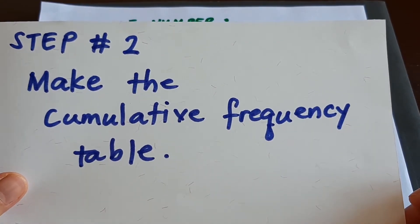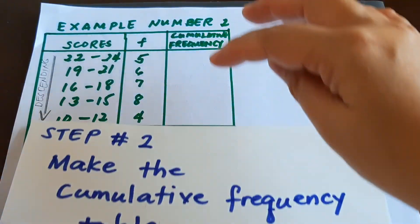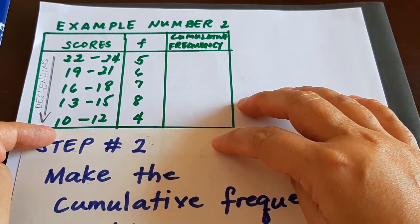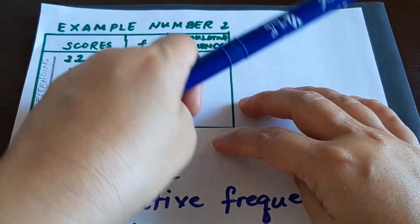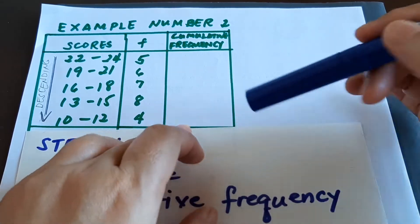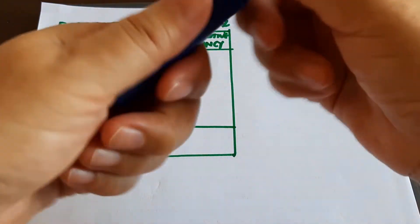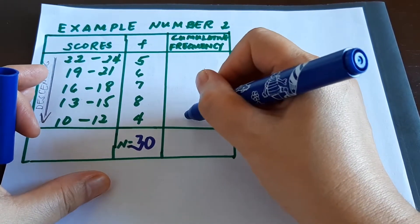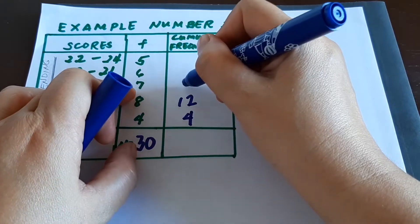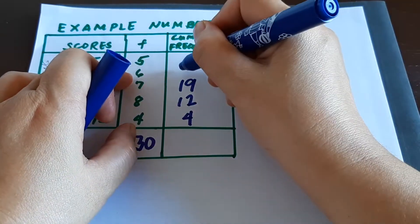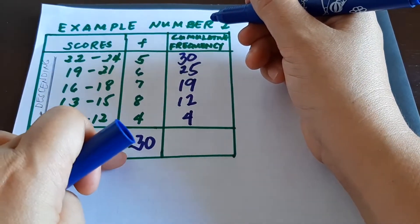Step two: make the cumulative frequency table. Be careful — you start from the lower scores going up to the highest score. So instead of starting with 5, you write 4 at the bottom and add upward. So: 4, plus 8 gives 12, plus 7 gives 19, plus 6 is 25, plus 5 is 30.